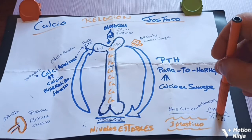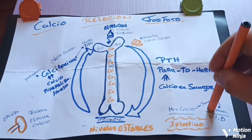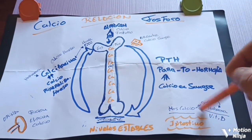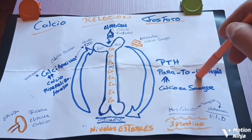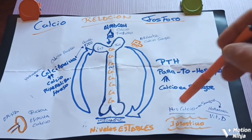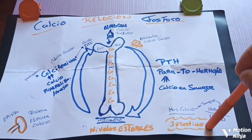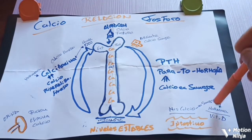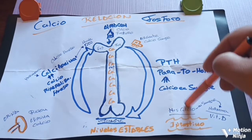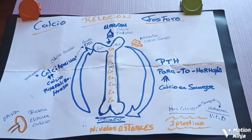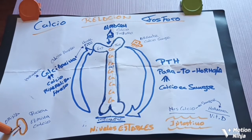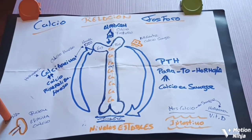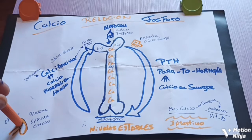Por eso es importante darle a nuestros pájaros todas las vitaminas necesarias a través de frutas y verduras. La vitamina D actúa en el intestino para enviar más calcio a la sangre cuando la paratormona no puede enviar el suficiente. Por el contrario, cuando tenemos demasiada cantidad de calcio en sangre, es el riñón el que se encarga de eliminar a través de la orina el calcio que sobra.